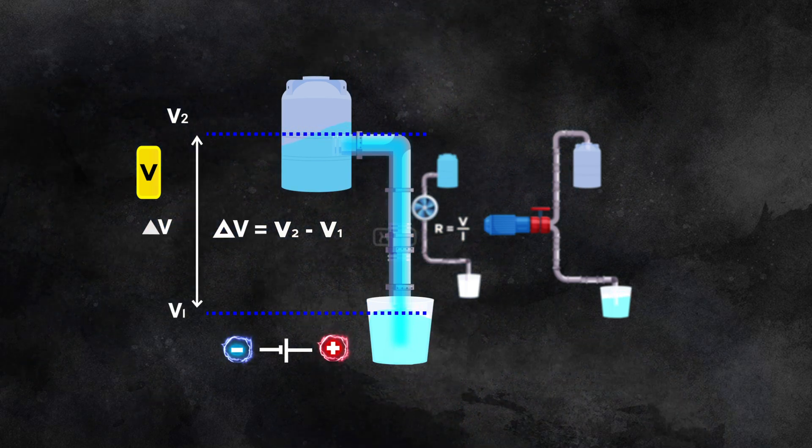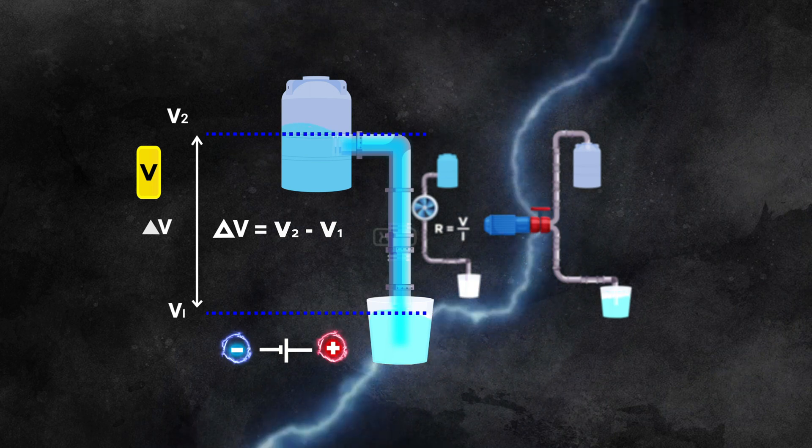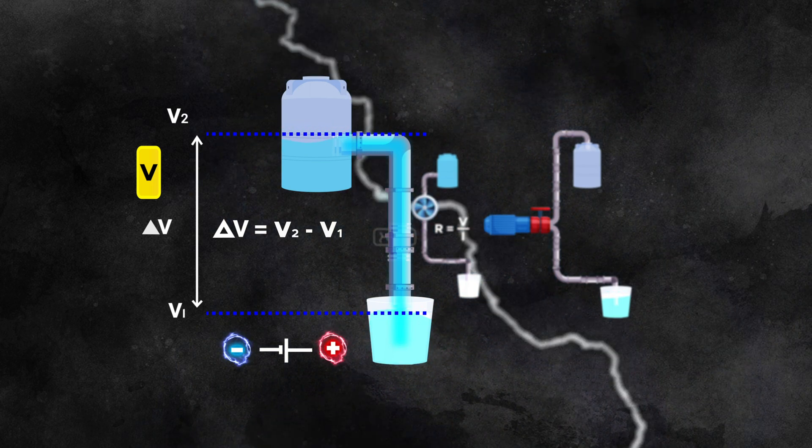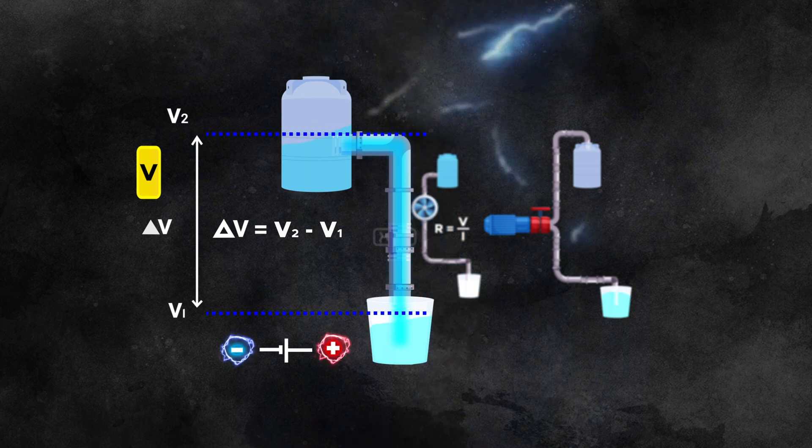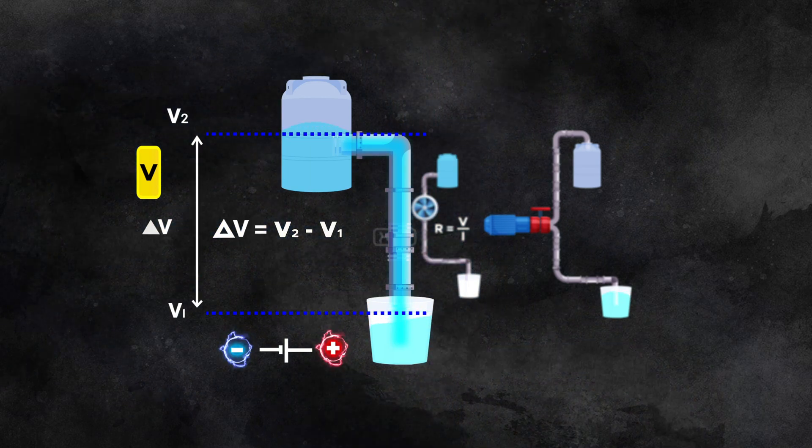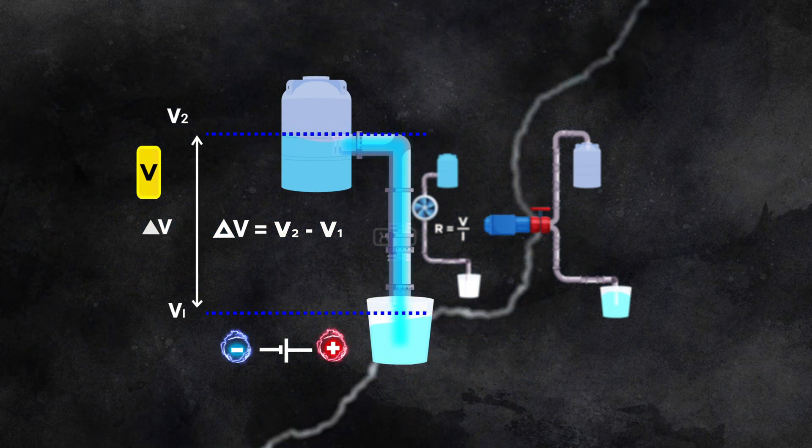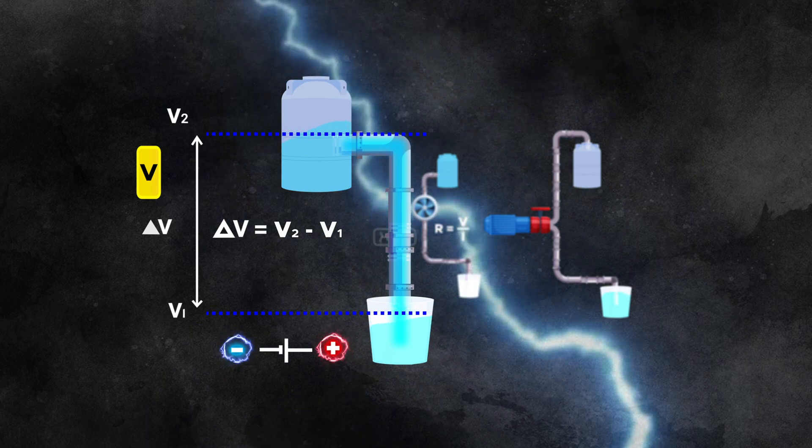Voltage can vary in magnitude and polarity, determining the direction and intensity of current flow in a circuit. Understanding voltage is crucial in designing and analyzing electrical circuits, as it plays a vital role in determining the behavior and performance of electrical systems.